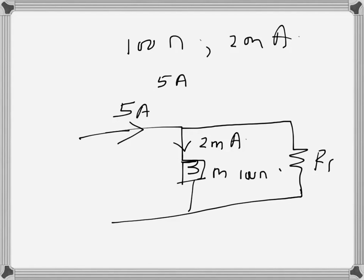Basically, the current that will go through the meter is 2 milliampere, so the current that will go through this one is 5 minus, so if I convert the milliampere to ampere, is 0.002. So that is the current that will go through this branch.